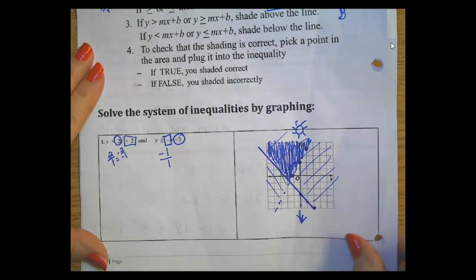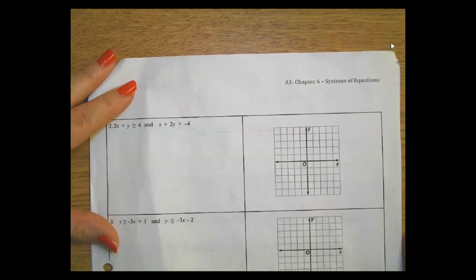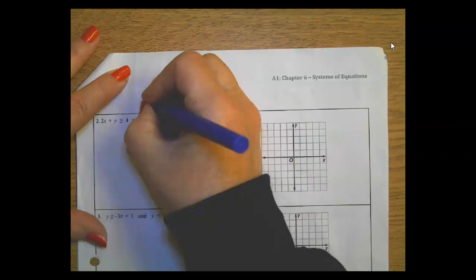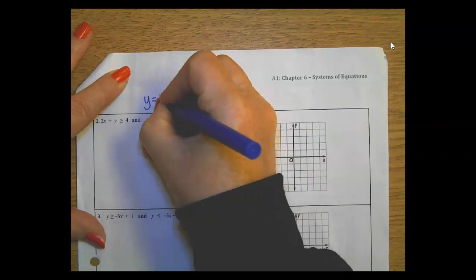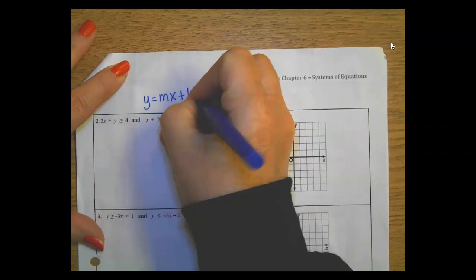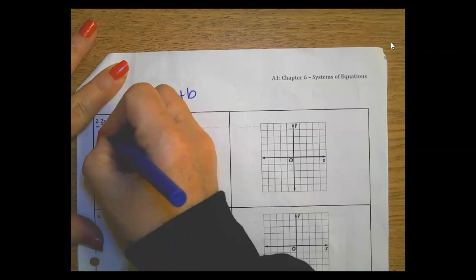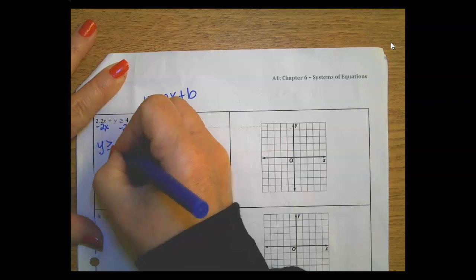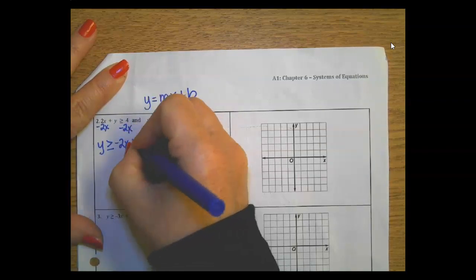This next one is not in y = mx + b, so we need to turn it into that. I'm going to subtract 2x from both sides, so I have y is greater than or equal to negative 2x plus 4.